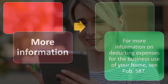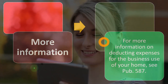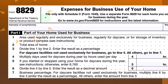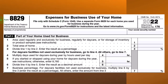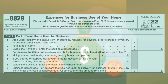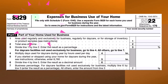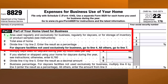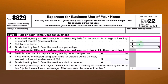Looking at Form 8829 — Expenses for Business Use of Your Home — this is the form we may need to populate when using the percentage method. Part one covers the area used regularly and exclusively for business versus the total area of the home. You divide them to get the ratio. For example, if your home office is 300 square feet and your total home is 900 square feet, you're using 33.33% for business.